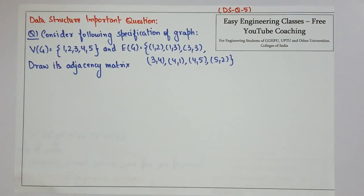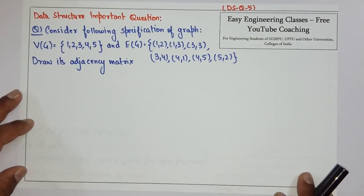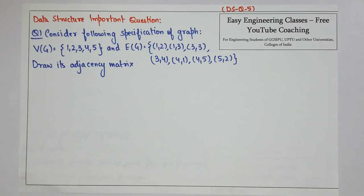Hello everyone. This is a question related to the graph theory of data structure. In this, the set of vertices and edges are given and we have to simply draw the adjacency matrix.